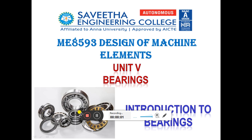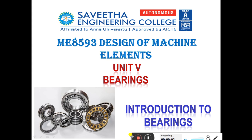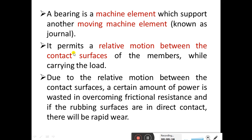Warm greetings. In this session we are going to start a new unit — Unit 5: Bearings. We will see an introduction to bearings. A bearing is a machine element which supports another moving machine element known as a journal. It permits relative motion between the contact surfaces of the members while carrying the load. Due to the relative motion between the contact surfaces, a certain amount of power is wasted in overcoming frictional resistance.